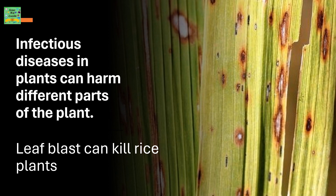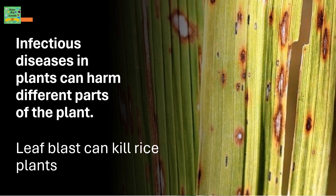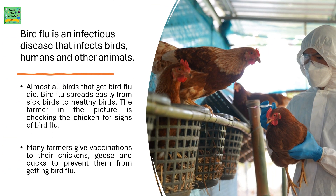Infectious diseases in plants can harm different parts of the plant. Leaf blast can also kill rice plants. Bird flu is an infectious disease that infects birds, humans, and other animals. Almost all birds that get bird flu die. Bird flu spreads easily from sick birds to healthy birds. The farmer in the picture is checking the chickens for signs of bird flu. Many farmers give vaccinations to their chickens, geese, and ducks to prevent them from getting bird flu.